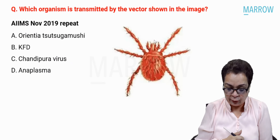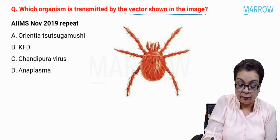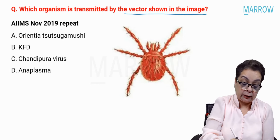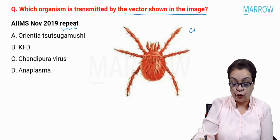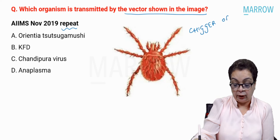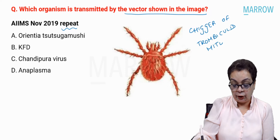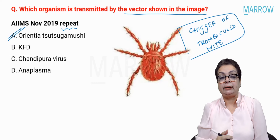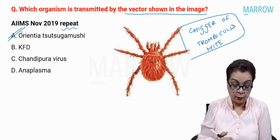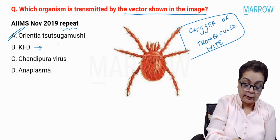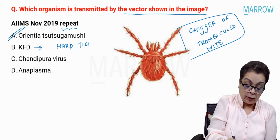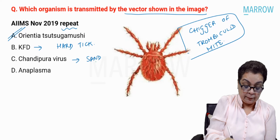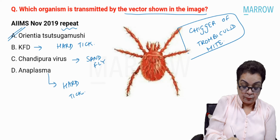Next was an image-based question: which organism is transmitted by the vector shown in the image? This is a repeat question. The image shows the larva of the trombiculid mite. It transmits Orientia, the causative agent of scrub typhus. For comparison: Kyasanur forest disease is transmitted by hard tick; Chandipura virus by sandfly; Anaplasma again by hard tick.